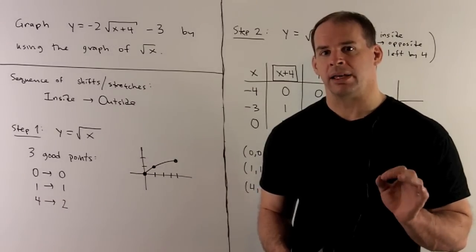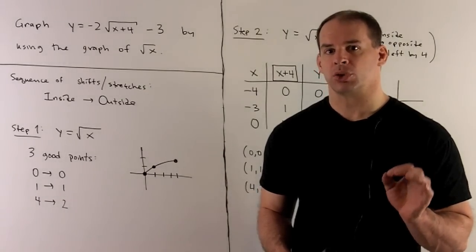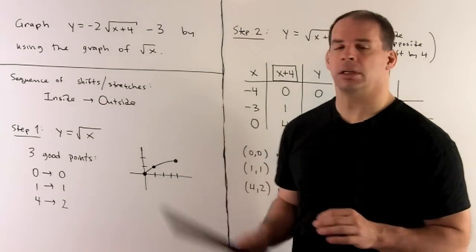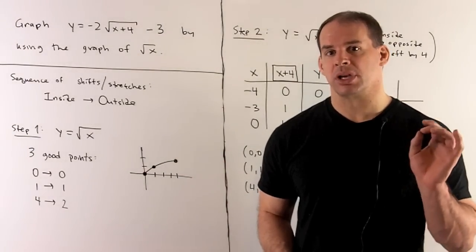Sketch the graph of y equals minus 2 square root of x plus 4 minus 3 by using the graph of y equals square root of x.